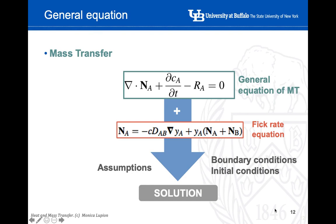We'll see how we can apply the equations that we know. If you recall, we defined two main equations in mass transfer. One is the general equation of mass transfer, when we apply the conservation of mass of element A. The second equation is the Fick rate equation, when we need to consider molecular diffusion and convective mass transfer. We normally solve mass transfer systems by integrating or combining these two equations, plus making assumptions about boundary conditions and initial conditions.